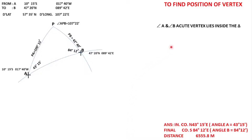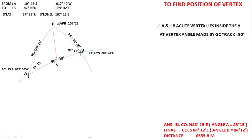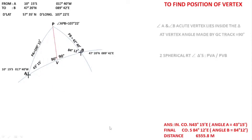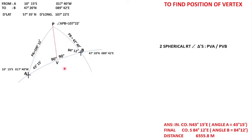How do we go about solving it? We look at these two angles here, A and B. If both of them are acute, then the vertex is assumed to be lying somewhere in between the two points, somewhere inside the triangle itself. We know that the angle at the vertex which the great circle makes is 90 degrees, so I have just drawn a meridian through the vertex. This gives us two triangles which are right-angled spherical triangles.